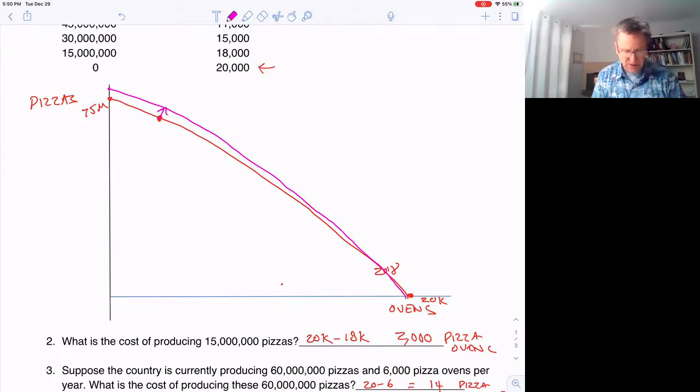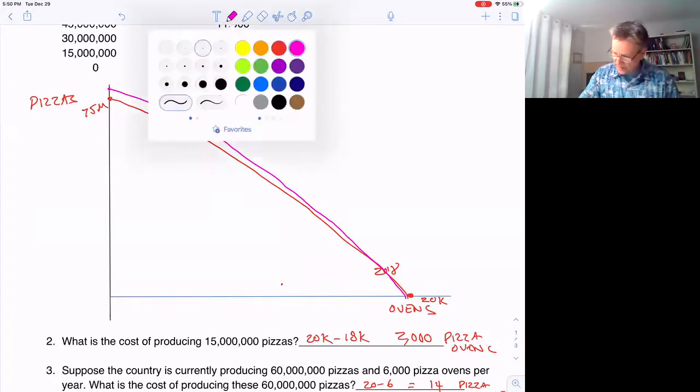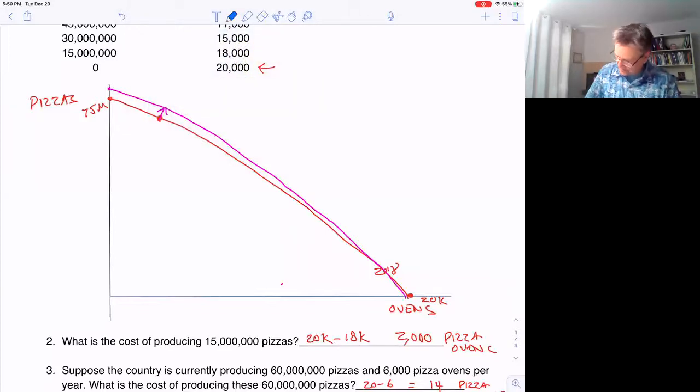Would your drawing be different in 2018? Poly Pizza produced 15 million pizzas and 18,000 pizza ovens. Well, if in 2018 we were down here, if that was the choice, this many pizzas and that many ovens, we're making a whole lot more ovens than in the first choice.